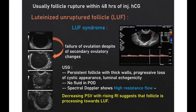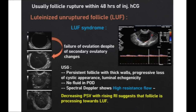Usually the follicle ruptures within 48 hours of HCG administration. But sometimes there is failure of ovulation despite secondary ovulatory changes in a mature follicle, leading to formation of a luteinized unruptured follicle. On ultrasound, it is seen as a persistent follicle with thick walls, progressive loss of cystic appearance, and luminal echogenicity. There is no fluid in the POD and high resistance flow is seen on spectral Doppler. Decreasing PSV with rising RI suggests the follicle is proceeding towards a luteinized unruptured follicle. Studies have shown the incidence of LUF is significantly increased in patients with unexplained infertility who underwent IUI after clomiphene stimulation. By diagnosing LUF syndrome properly, we can help clinicians decide proper treatment and increase the rate of conception.